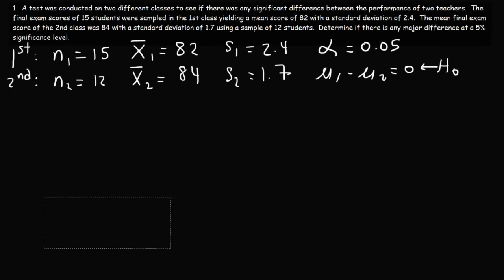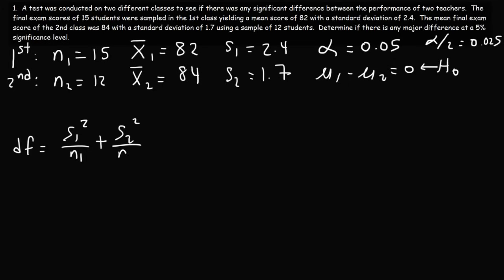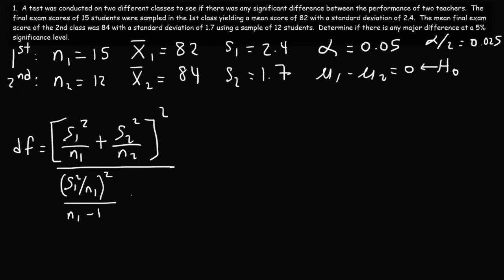Now that we know which distribution to use, we need to find the critical t values. Alpha is 0.05, so alpha over 2 is 0.025. Our next step is to calculate the degrees of freedom using this formula: S1 squared over N1 plus S2 squared over N2, all squared in the numerator; divided by (S1 squared over N1) squared over N1 minus 1, plus (S2 squared over N2) squared over N2 minus 1.